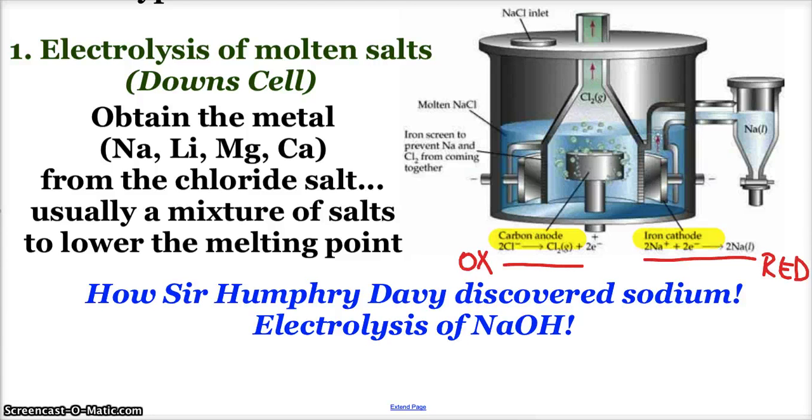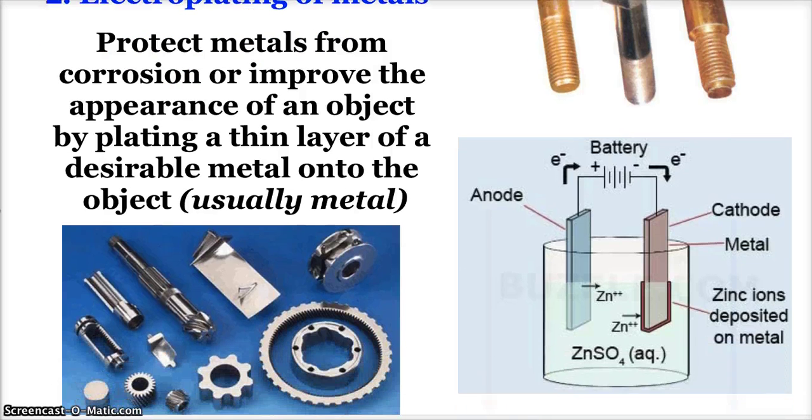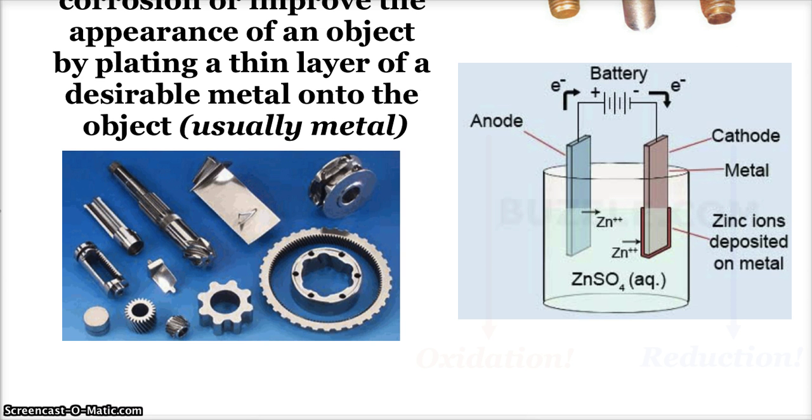The other important cell that we look at or talk about is electroplating of metals. Whether we're doing this for protection or for making metals prettier for jewelry, you put a layer of the desirable metal onto the object that you want to plate. So whether it be like galvanized steel—putting a nice thick coating of zinc on top of the steel—or plating jewelry with copper, gold, or silver. This is what we're going to be doing in lab: we're going to plate copper onto another metal, probably brass.